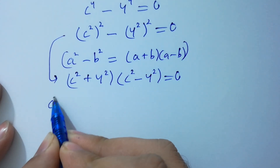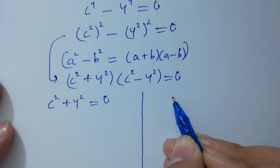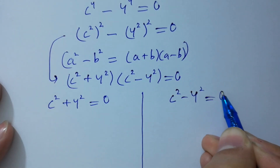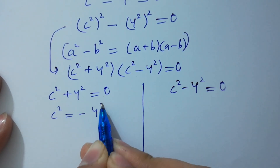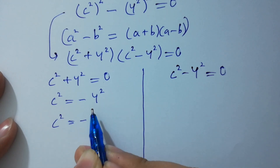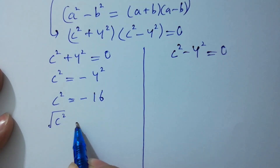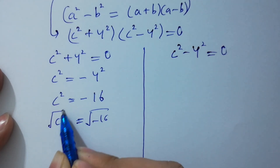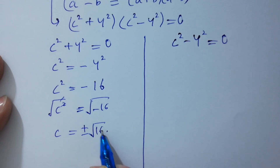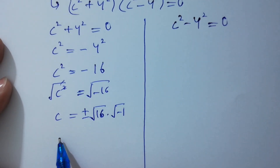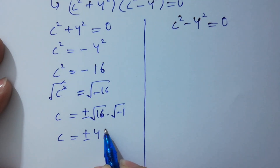Either c squared plus 4 squared equals 0, or c squared minus 4 squared equals 0. From c squared plus 4 squared equals 0: c squared equals minus 4 squared, which is minus 16. Taking square root on both sides, c equals plus or minus square root of 16 times square root of minus 1, so c equals plus or minus 4i, from complex numbers.